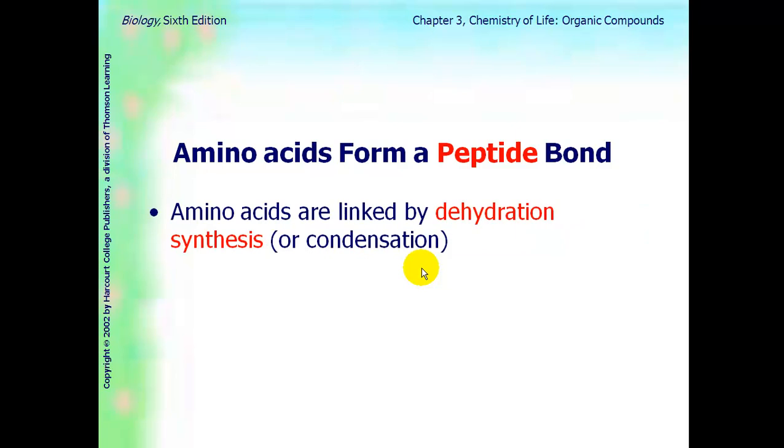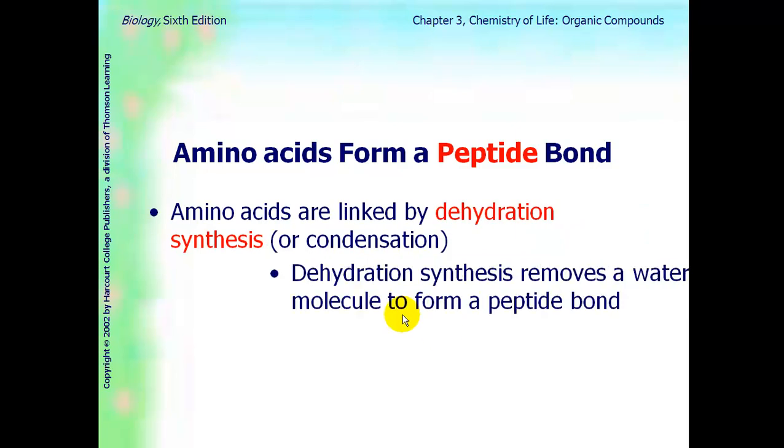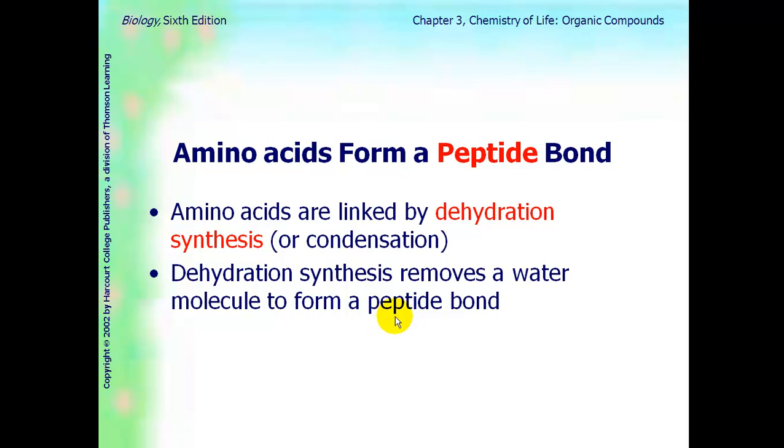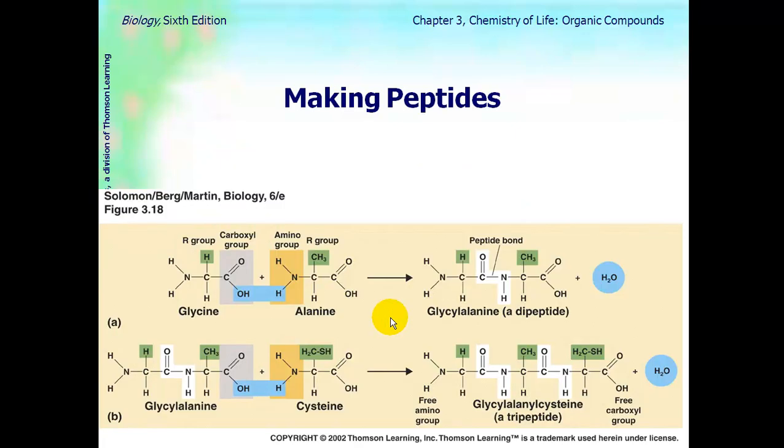Amino acids are bonded together by a peptide bond, and this is done by the same process as the others, dehydration synthesis. Dehydration synthesis removes the water to form the bond, as you can see right here. Here's glycine, and here's alanine. They remove the water right here. The hydroxyl group is taken off the carboxyl, and another hydrogen is taken off the amino group, and that forms your water molecule, and then we form a bond between the carbon and the nitrogen. That is called a peptide bond.